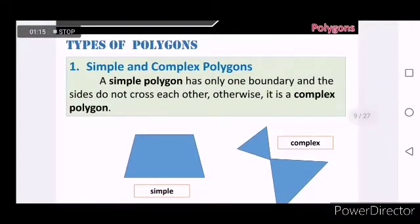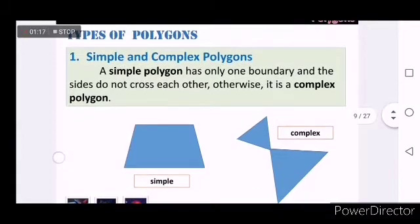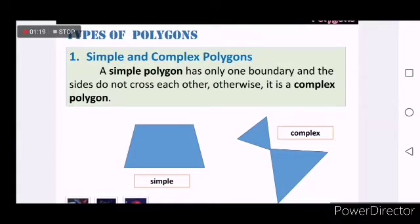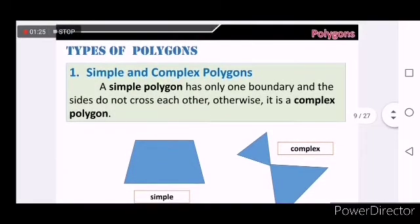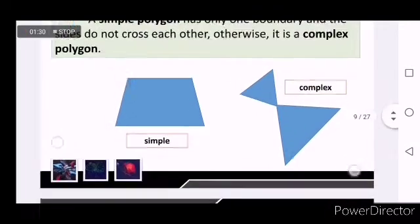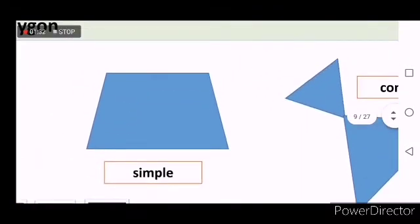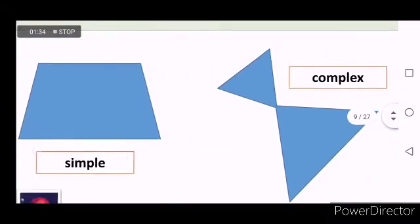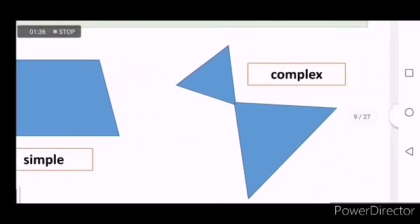We also have types of polygons. The first is called simple and complex polygons. A simple polygon has only one boundary and the sides do not cross each other. Otherwise, it's complex. This is a simple polygon and this is a complex polygon because two sides intersect each other.